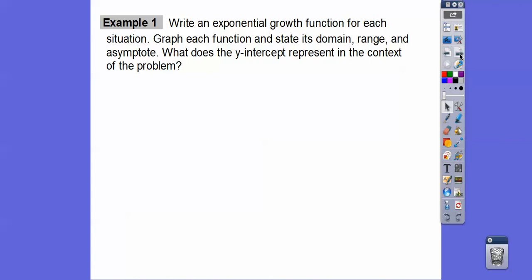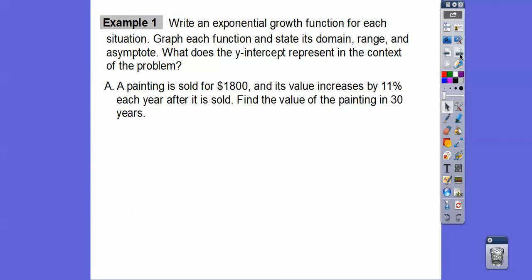So let's write an exponential growth function for the situation and graph the function and state its domain and range and the asymptote. And what does the y-intercept represent in the context of the problem? So here, a painting is sold for $1,800 and its value increases 11%. So this would be 0.11. After each year, it is sold. So find the value of the painting in 30 years. So here's our function right here. Since it's increasing, then it's one plus R to the T. So it's going to be one. And it's always A. I'm sorry. I didn't talk about A. A is always your initial amount. So A is the beginning amount. So it's 1,800 times 1 plus 0.11. So 1 plus 0.11 is 1.11 to the T power.